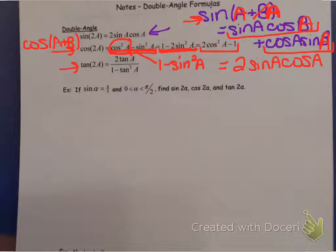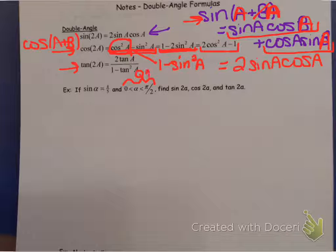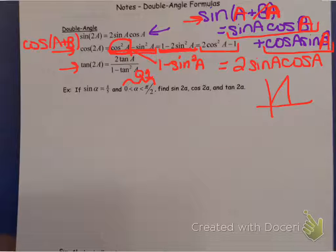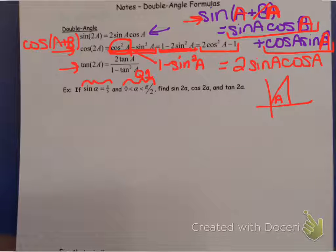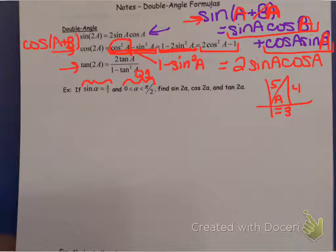There are two types of problems we do with double angles. The first is picture drawing. We're told that angle A, or alpha, is in quadrant 1 because it's between 0 and pi halves. So I'll draw a picture and call it angle A. We were told the sine of angle A was 4/5, so the opposite side is 4 and the hypotenuse is 5 - our favorite 3-4-5 right triangle.